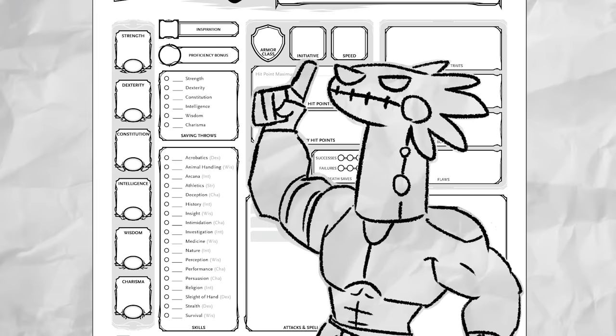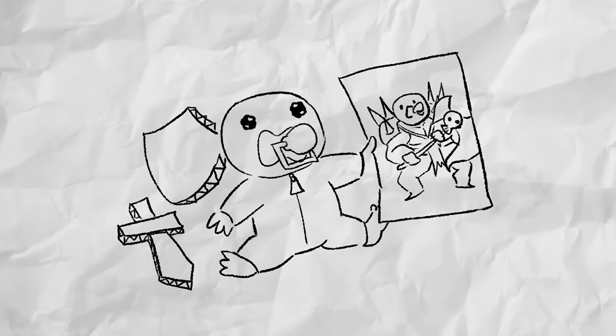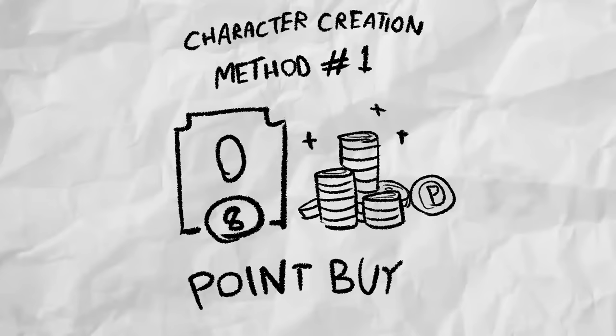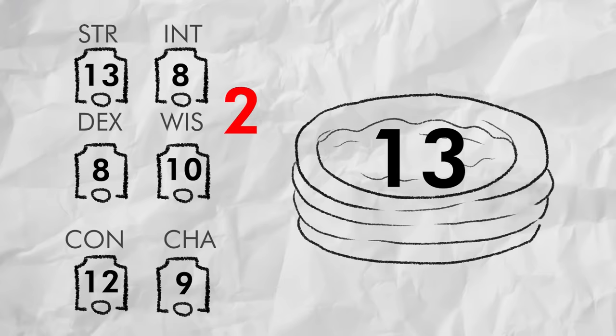Now that we're done covering ability scores, we can go over how you get them. And there are three generally used methods. If you're a wee baby who needs to meticulously make your perfect OC, there's the point buy system, which works like a basic video game. All your stats start at 8 and you have a pool of points, usually 27, to distribute between them all, with the cost going up to 2 points per ability score increase higher than 13 and the cap being at 15.